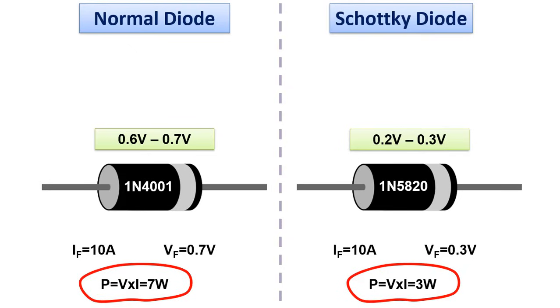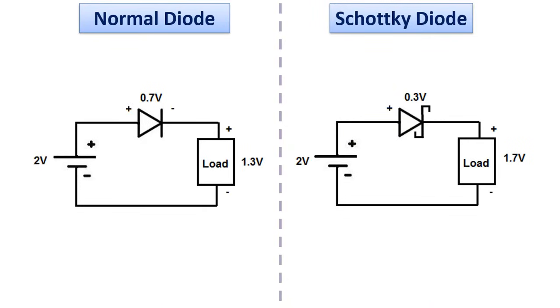Therefore, the low value of this power, which is wasted on the Schottky diode, will provide an advantage in terms of efficiency. This situation also affects the voltage value falling on the load. For example, a 2-volt source on the left is connected in series with a load with a silicon diode. Since 0.7 volts will remain on the diode, 1.3 volts can be transferred to the load.